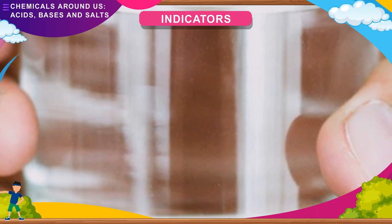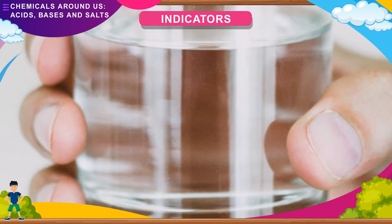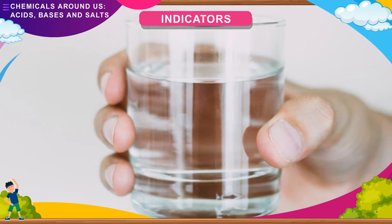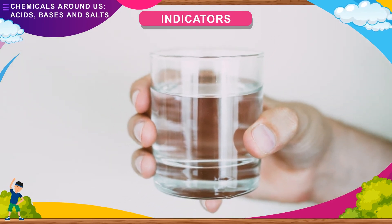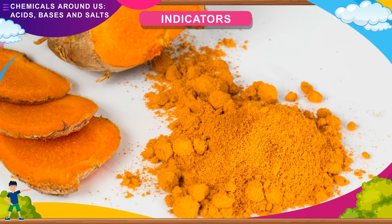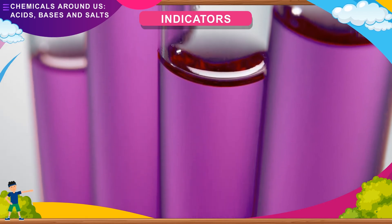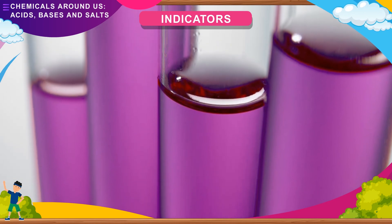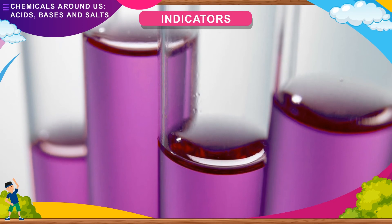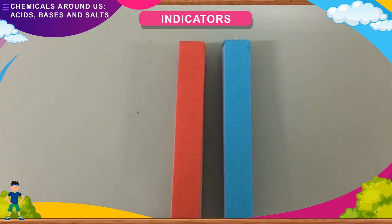Indicators: Most acids or bases are colorless liquids, just like clear water. To know whether a substance is acidic or basic, we use special substances called indicators. An indicator is a substance that changes color in acids and bases. Indicators may be natural, like turmeric and cabbage juice, or chemical, like methyl orange and phenolphthalein. The most commonly used natural indicator is litmus, extracted from lichens. It is purple in distilled water; it turns red when added to an acid solution and blue when added to a basic solution. It is available as a solution or as litmus paper — generally red and blue litmus paper.